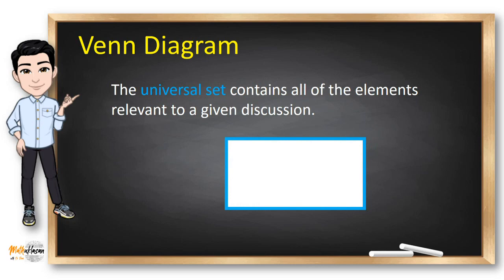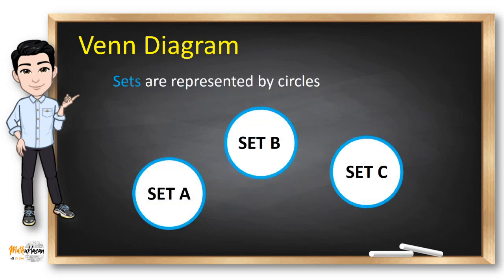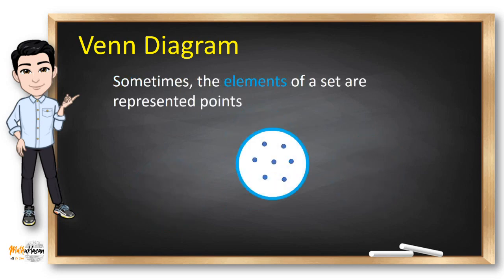Note that the universal set varies depending on which objects are of interest. So if the universal set is the deck of cards, all 52 cards in the deck should be inside this rectangle. Inside the rectangle, circles or other geometrical figures are used to represent sets. Sometimes, points are used to represent the particular elements of the set.